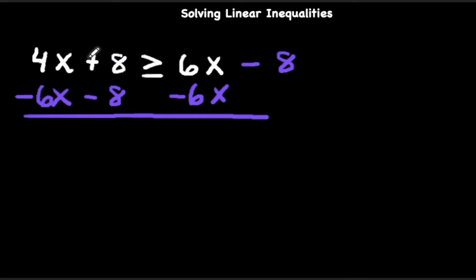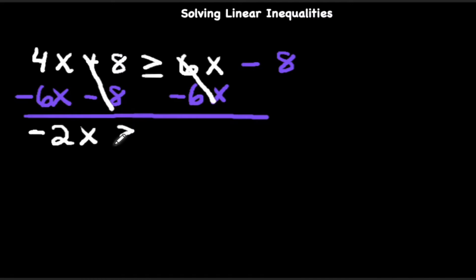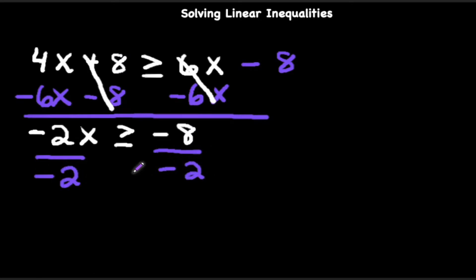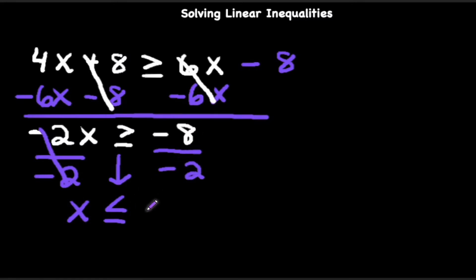Positive 8 minus 8 cancels, and 6x minus 6x cancels. 4x minus 6x is negative 2x, which is greater than or equal to negative 8. Now we need to isolate x, so we're going to divide by negative 2. Notice we are dividing by a negative number, so we need to reverse the inequality symbol — that becomes less than or equal to. The negative 2 cancels, leaving x is less than or equal to positive 4, since negative 8 divided by negative 2 is positive 4.